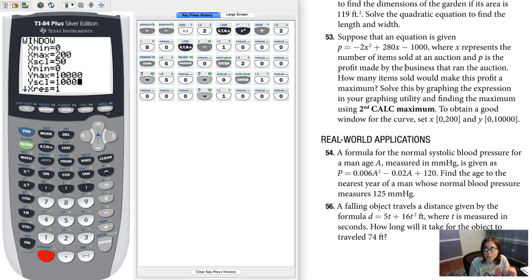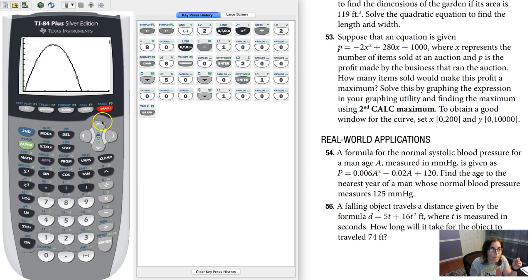Whenever you adjust your window, don't hit zoom 6 again, because that'll just reset this to negative 10, 10, negative 10, 10. Hit graph, and we should be able to see it. Okay, now if I take a look, there's my maximum.